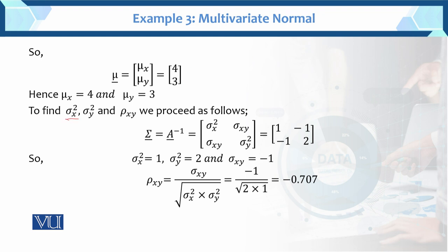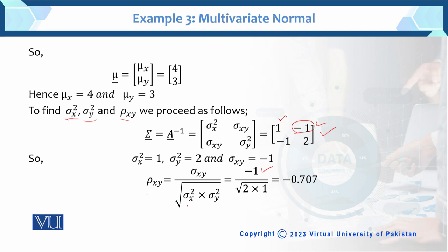Further, to find sigma squared x, sigma squared y, and the correlation: sigma squared x is 1, sigma squared y is 2, and the covariance is minus 1. The correlation equals the covariance divided by the square root of the product of the variances. After multiplying, the final correlation is minus 0.707.